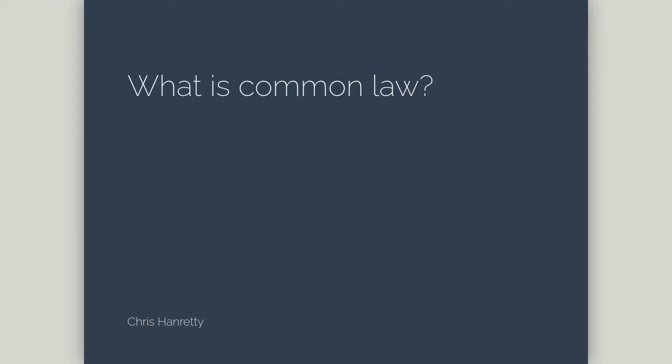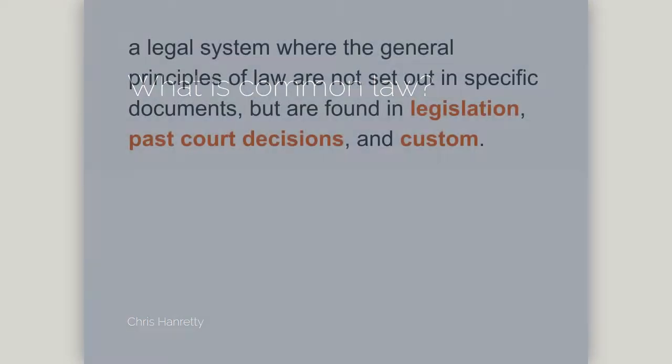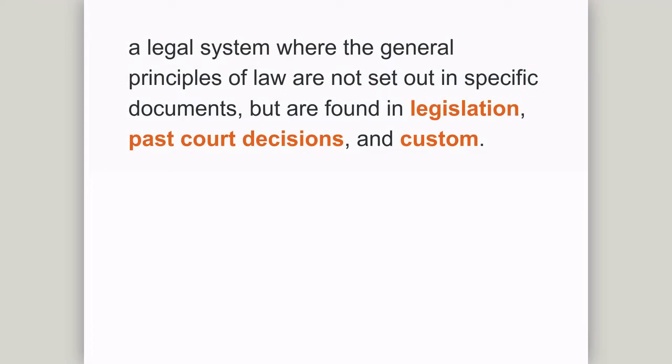A common law system is a legal system where the general principles of the law are not set out in specific documents, but are found in legislation, past court decisions and custom. A court decision which establishes a point of general principle is treated as establishing a precedent.